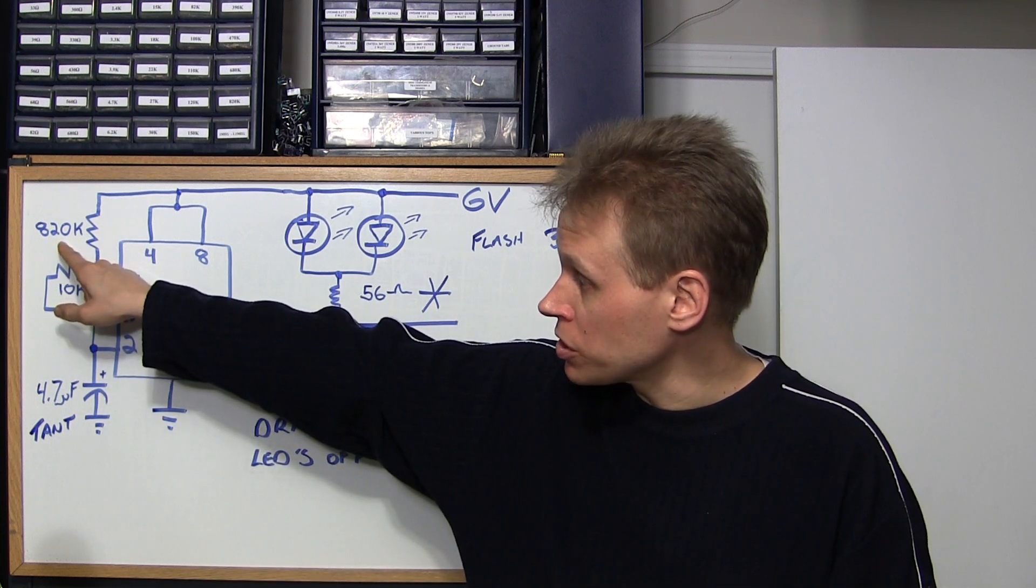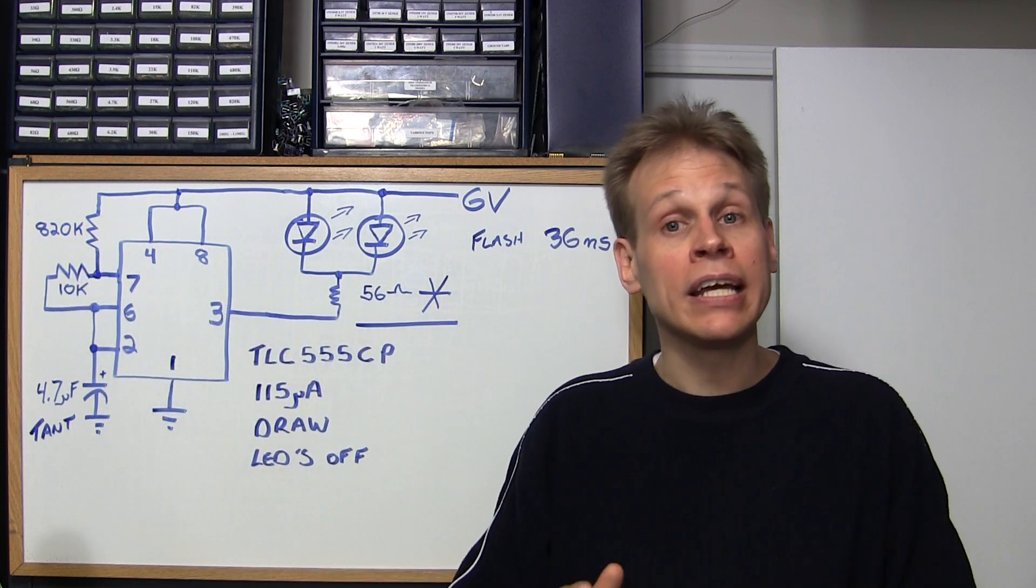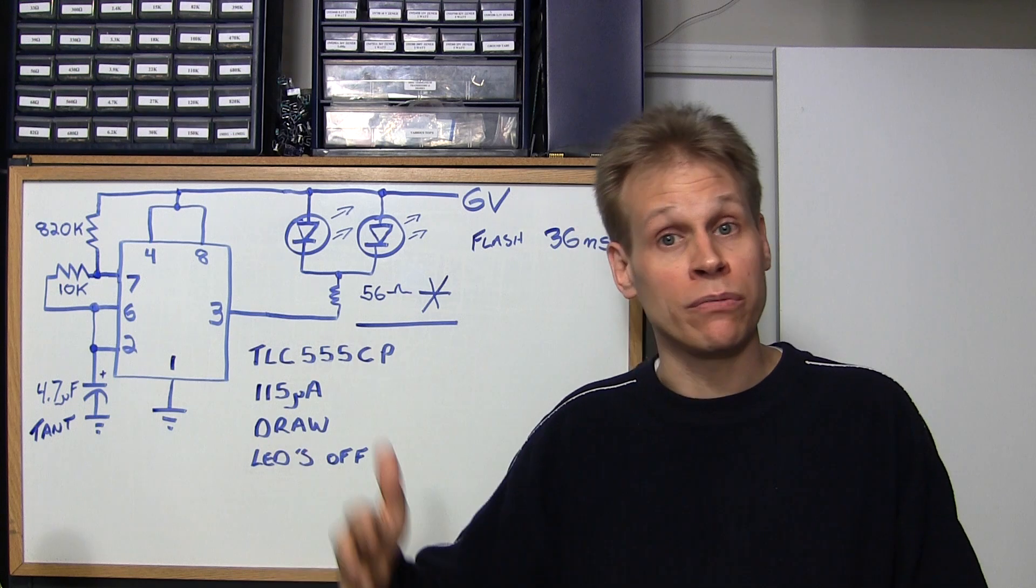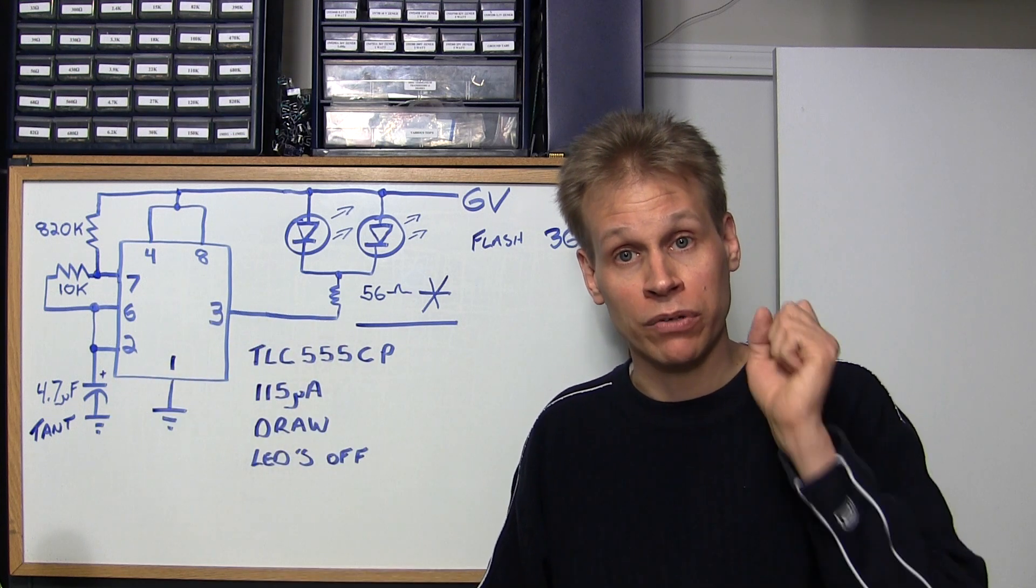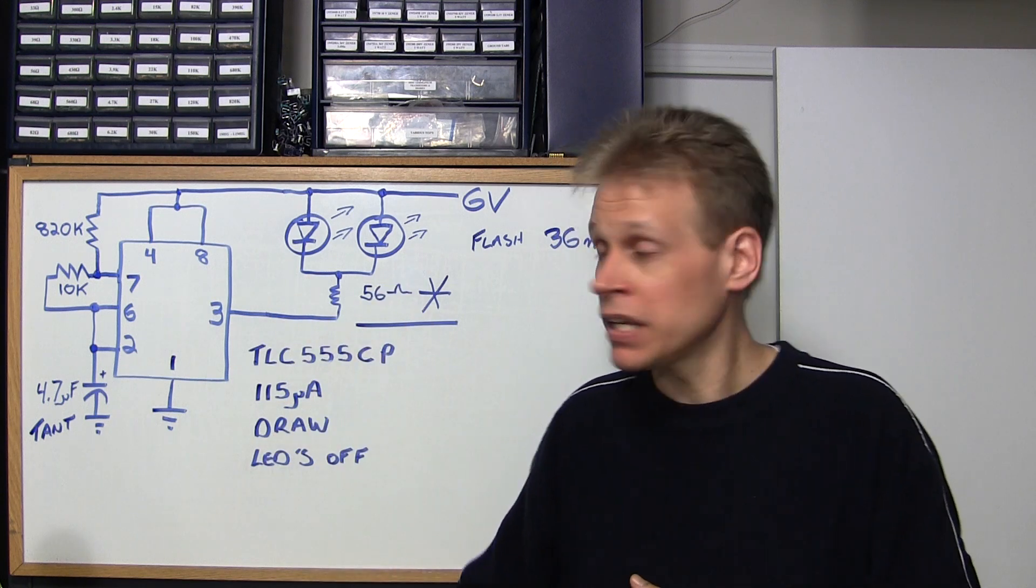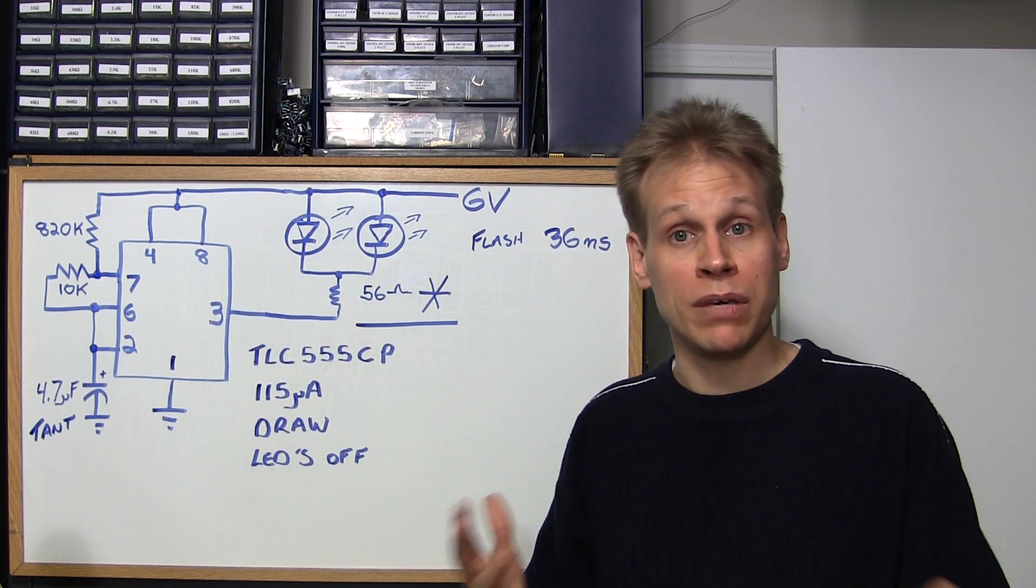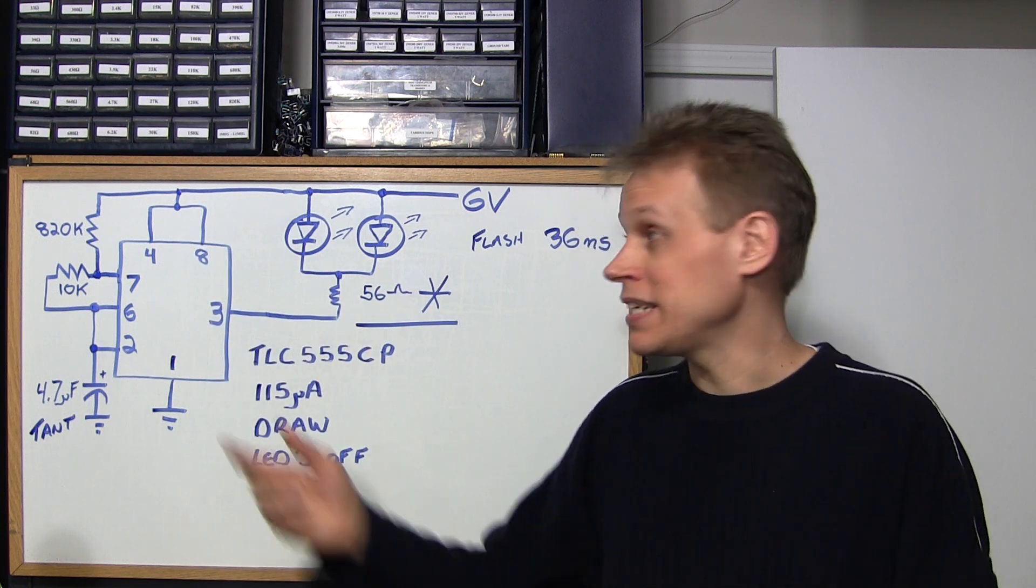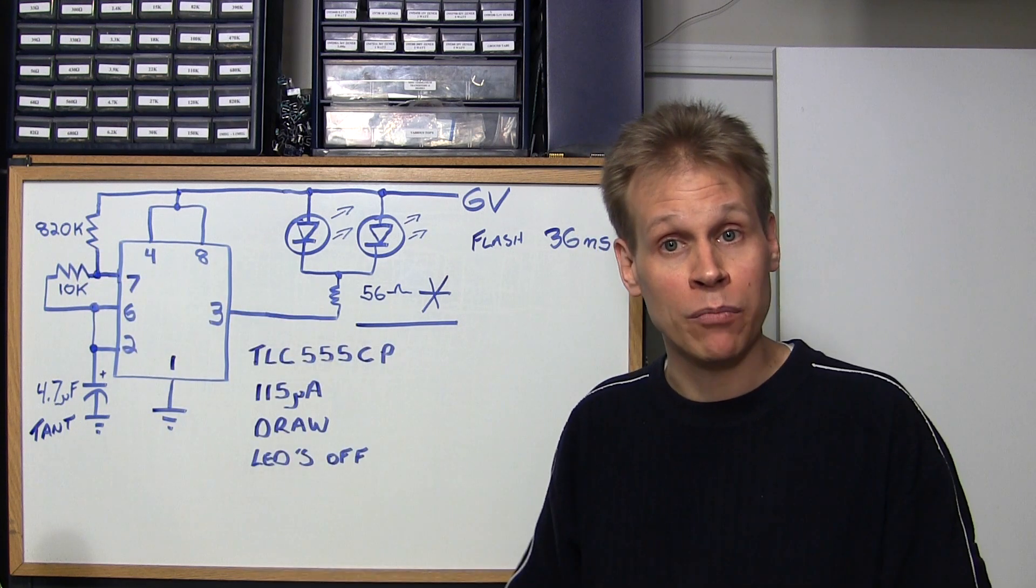So you get a really quick flash and it would wait maybe 7 seconds and then flash again. If you wanted to make it faster, say maybe 1.5 seconds, you'd take this maybe down to 470k for an example. Again you would have to experiment with this to see exactly how fast it would flash.